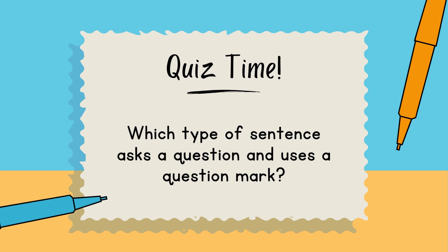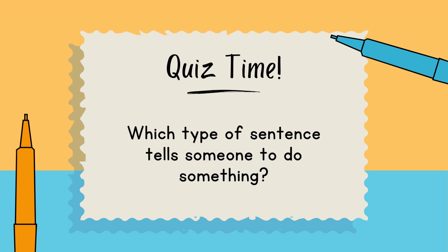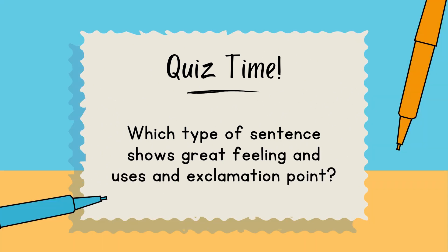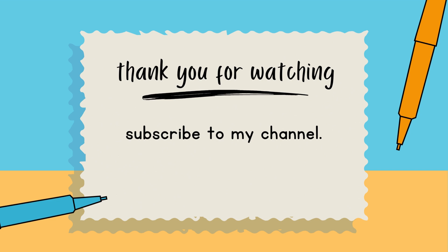Now, quiz time! Which type of sentence asks a question and uses a question mark? It's the interrogative sentence. Which type tells someone to do something? It's the imperative sentence. Which type shows great feeling and uses an exclamation point? That's the exclamatory sentence. Thank you so much for watching — please subscribe to my channel.